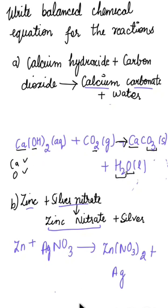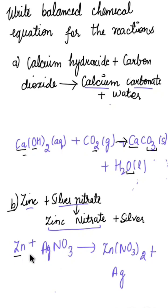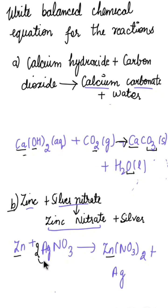Hydrogen: two atoms on the reactant side and two on the product side — balanced. So equation one is a balanced chemical equation. For equation two, checking oxygen: the product side has Zn(NO₃)₂ giving six oxygen atoms, but the reactant side only has three. So we multiply AgNO₃ by 2, giving six oxygen atoms. Then we multiply Ag on the product side by 2 to balance silver.